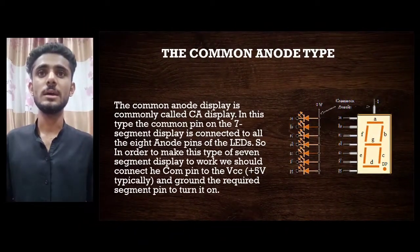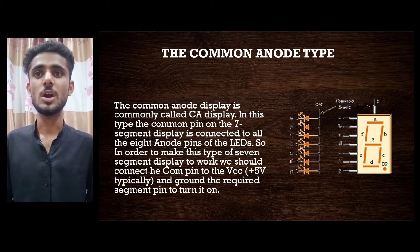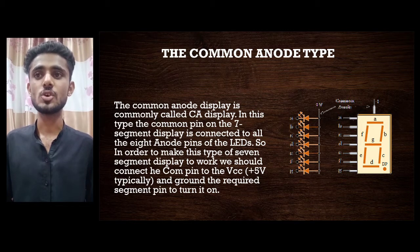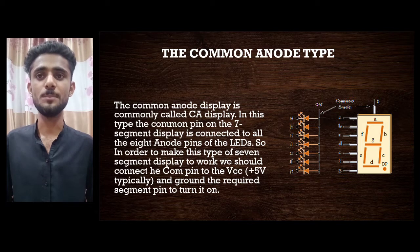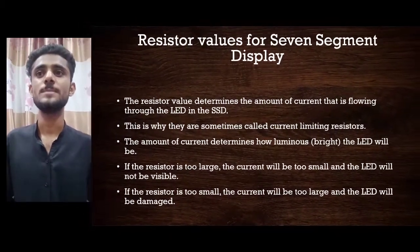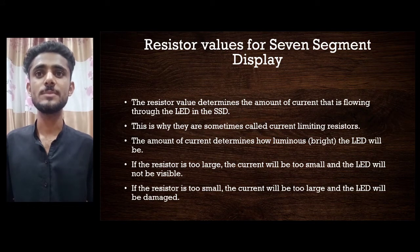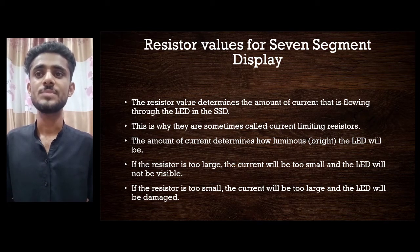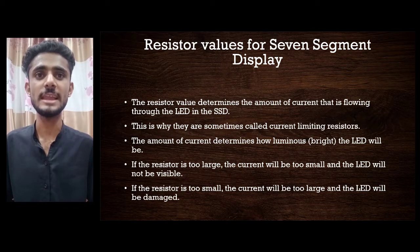The common anode (CA) display has a common pin connected to all eight anode pins of the LEDs. In order to make this type work, we connect the common pin to VCC and ground the required segment pin to turn it on. The resistor value directly means the amount of current that is flowing through the LED in the SSD — this is why they are sometimes called current-limiting resistors. The amount of resistance determines how bright the LED will be.